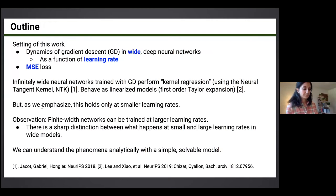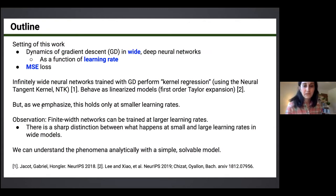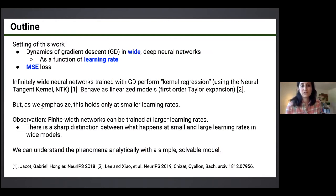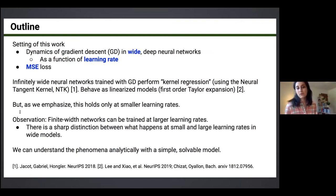If you think of Taylor series: take your neural network function f(x) depending on parameters theta and expand about the initial point — you get a first-order term, second-order term, and so on. It turns out all higher-order terms don't matter, and the network behaves as if you kept only that first linear term. But this relationship only holds at smaller learning rates. In practice, if you train a finite-width network, you can train at much larger learning rates, and there is a sharp distinction between small and large learning rate behavior.